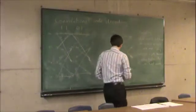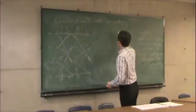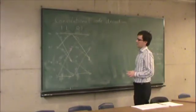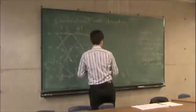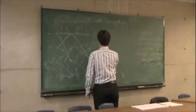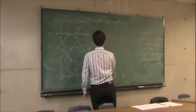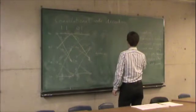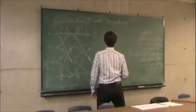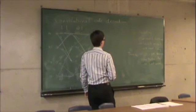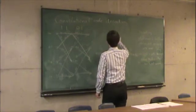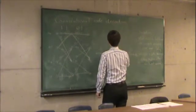So how does the Viterbi algorithm work? The fundamental principle is this: let's say we're driving from Vancouver to Toronto, and every road that goes from Vancouver to Toronto passes through either Edmonton or Calgary.